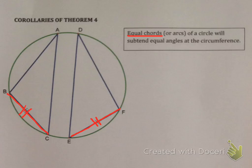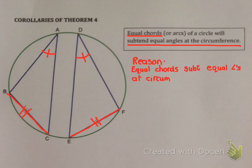The first one says if you're given equal chords, then they will subtend equal angles at the circumference. So if you have any two chords that are equal, the angles that they subtend on the circumference are also equal. Our reason being equal chords subtend equal angles at circumference.